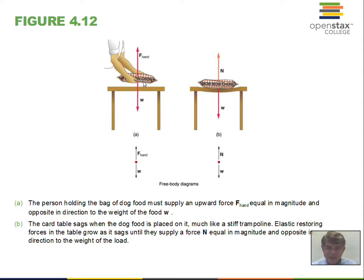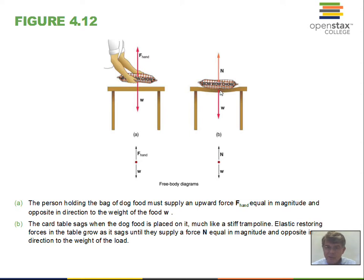F equals ma — which object has big acceleration? The dog food, if the person lets go. The Earth will not accelerate much due to the pull of dog food on it. If we set the dog food on a table, the table bends slightly and the molecules act like springs; those springs get extended and create an upward force. We call this the normal force — a contact force with the surface. The normal force is upward on the dog food, weight is downward, and we use that as our free body diagram.